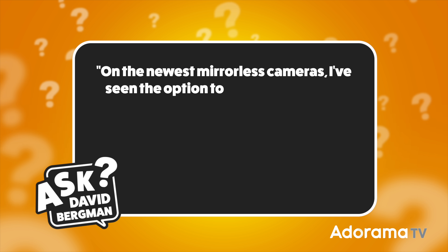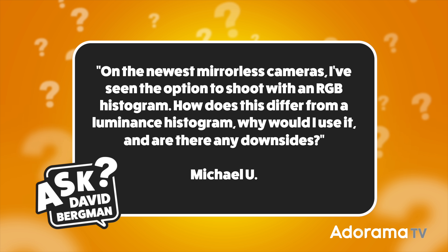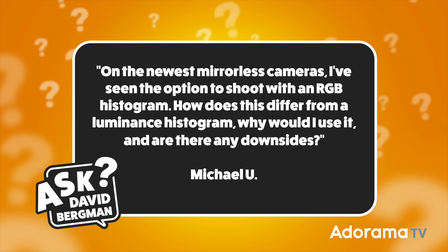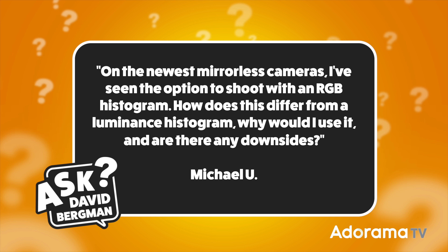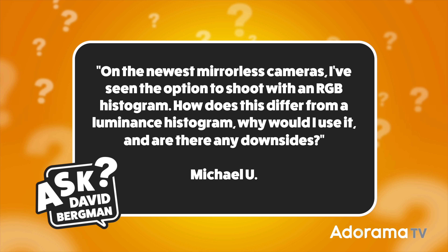Today's question comes from Michael Yu and he wants to know: on the newest mirrorless cameras, I've seen the option to shoot with an RGB histogram. How does this differ from a luminance histogram? Why would I use it and are there any downsides? It's a great question Michael, and I appreciate you sending that in. Let's go ahead and take this one step at a time.